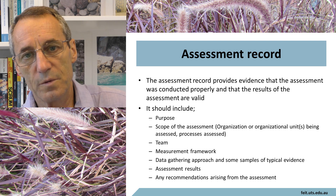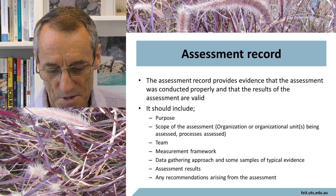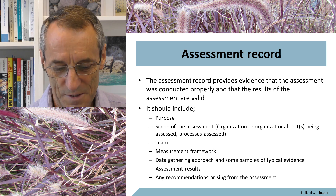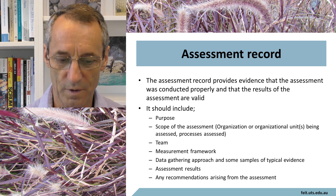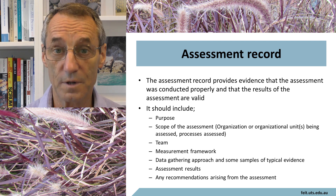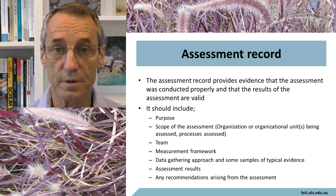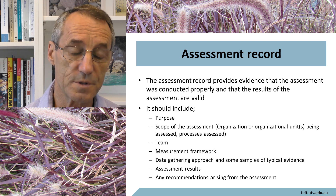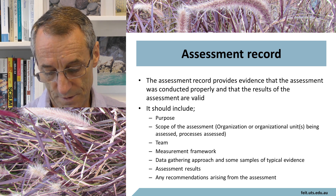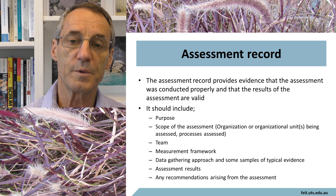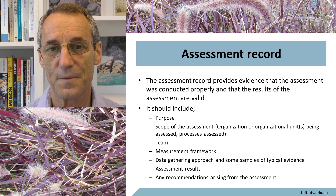There should be an assessment record, which is the collection of all observations, all ratings, and everything. The assessment record should include: the recorded purpose of why the assessment was done and what the client wanted; the scope, so it is very clear what was and was not assessed; who the team were; what the measurement framework was — this is important because different measurement frameworks can be used with the SPICE process assessment method; the data-gathering approach; some samples of typical evidence; the assessment results; and any recommendations arising from those results, which is where process improvement comes in.